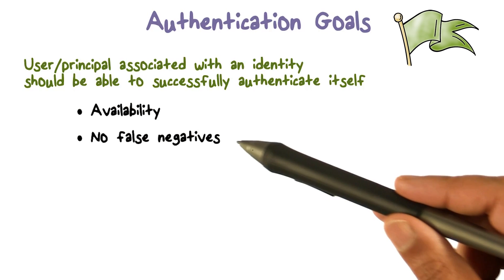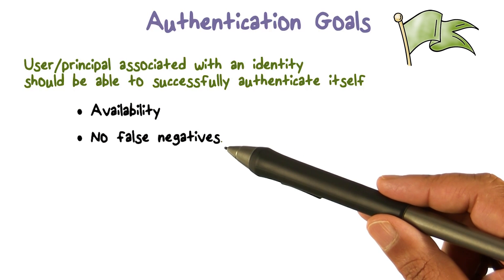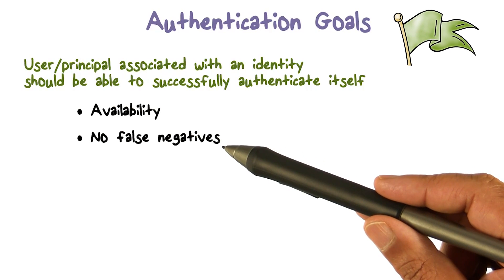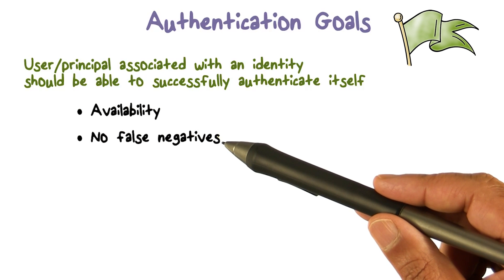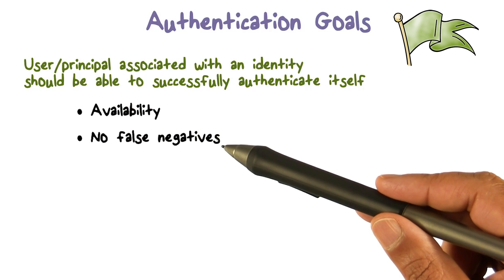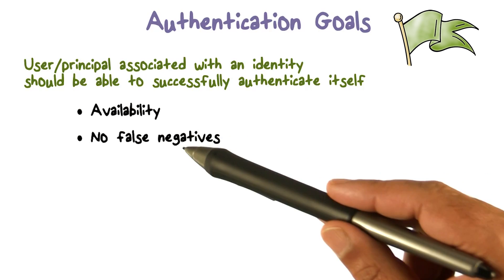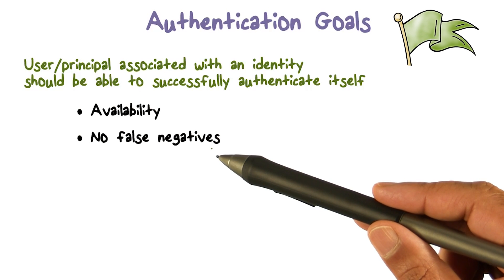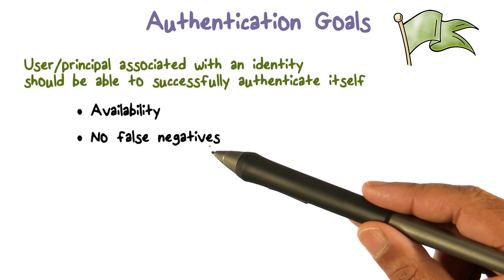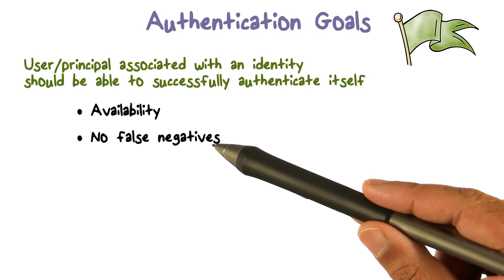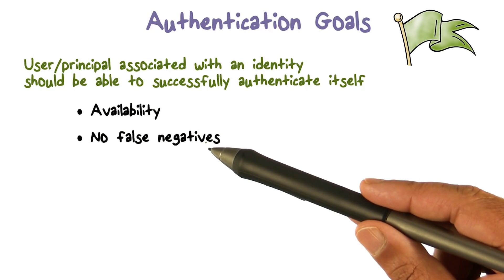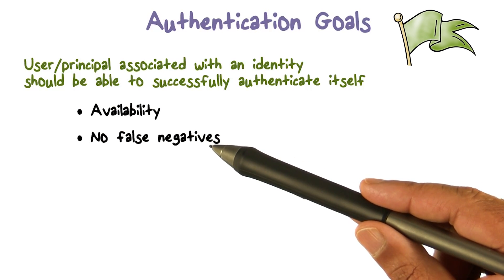Negative refers to the outcome. If the authentication process completes successfully, that is a positive outcome. A negative outcome is when we deny the authentication or login request — for some reason we believe the evidence is not right, so we say login unsuccessful or authentication unsuccessful.